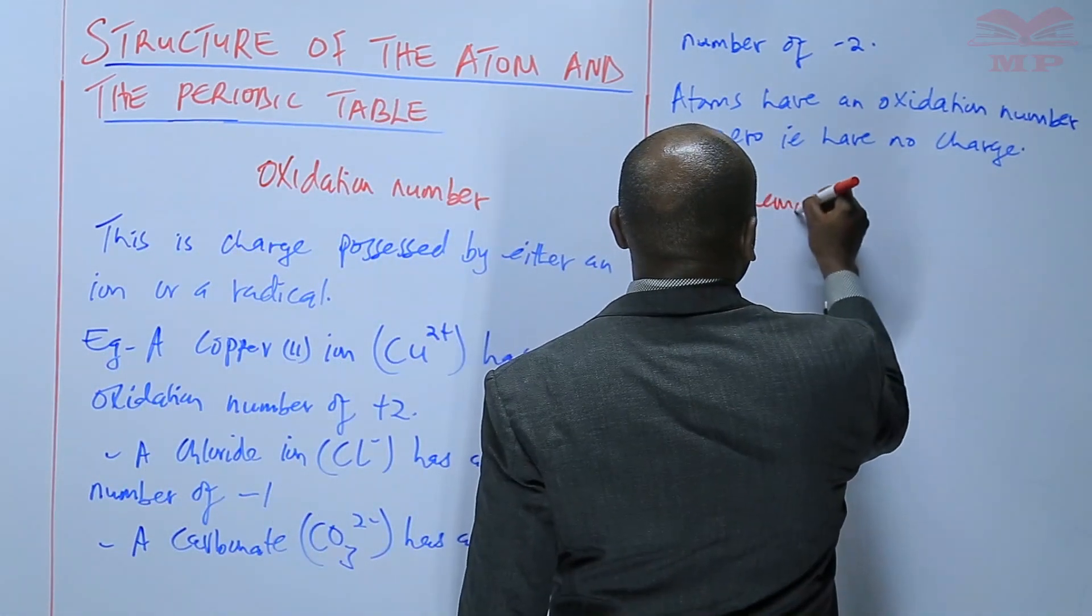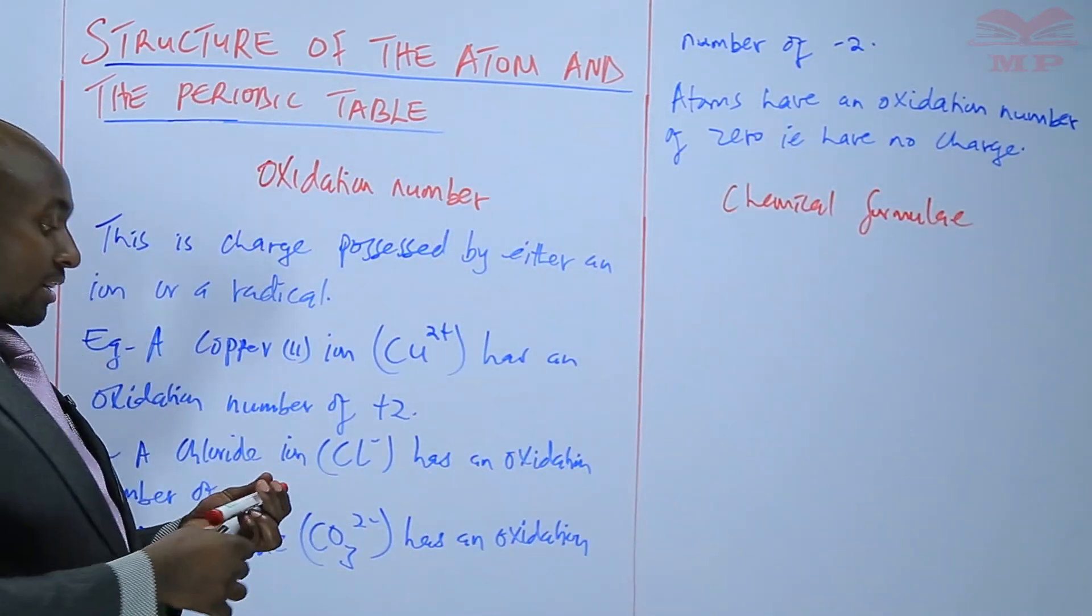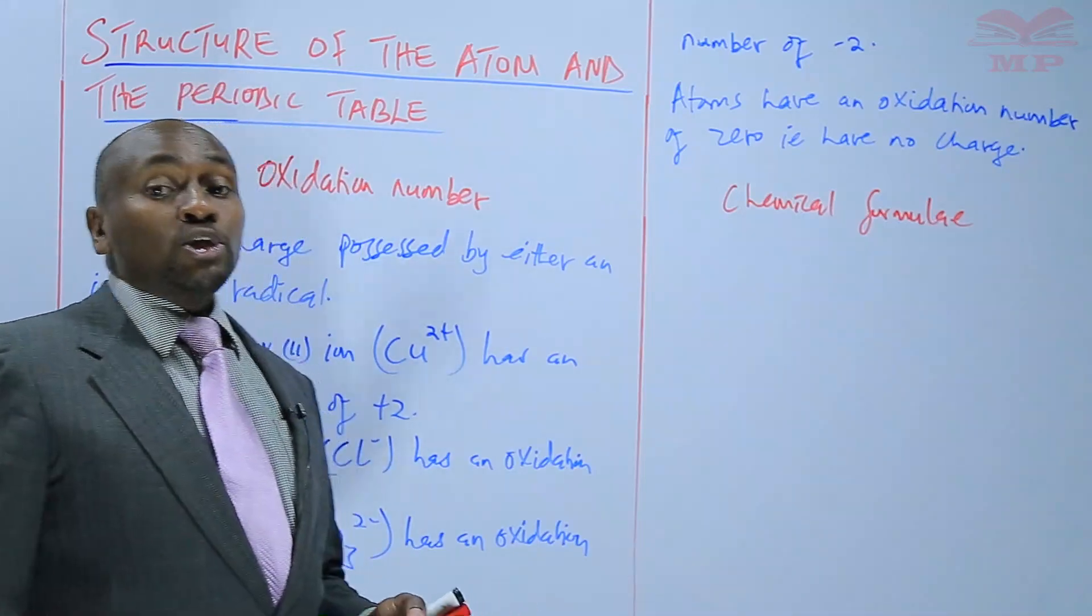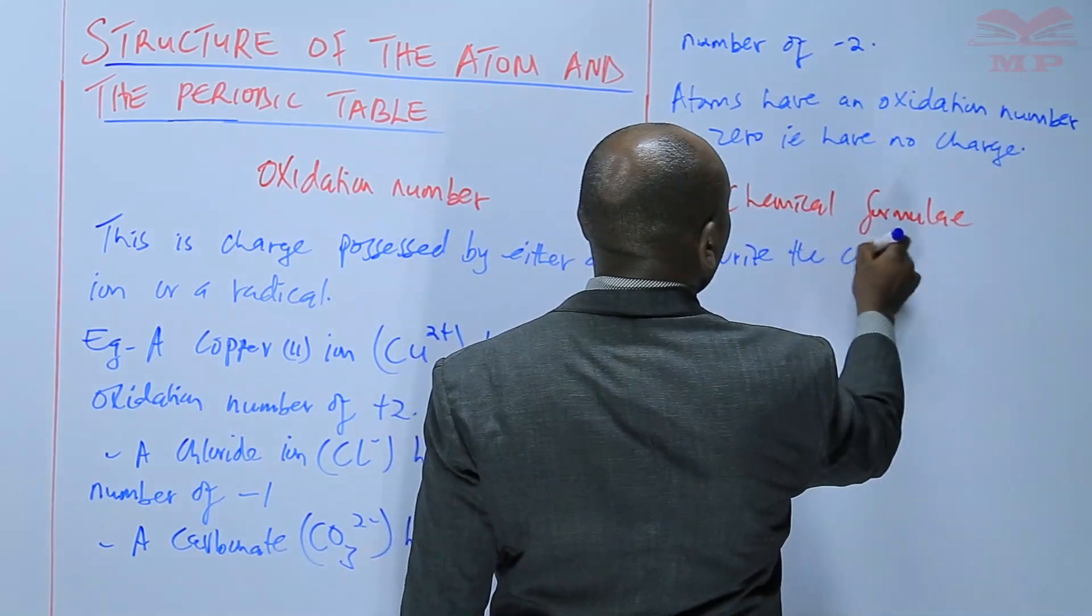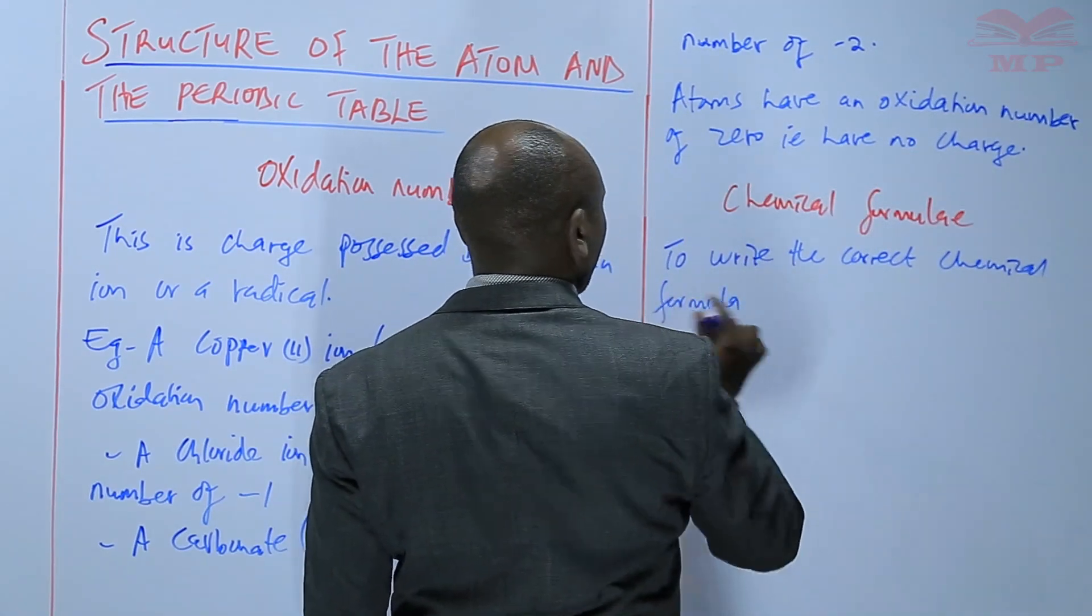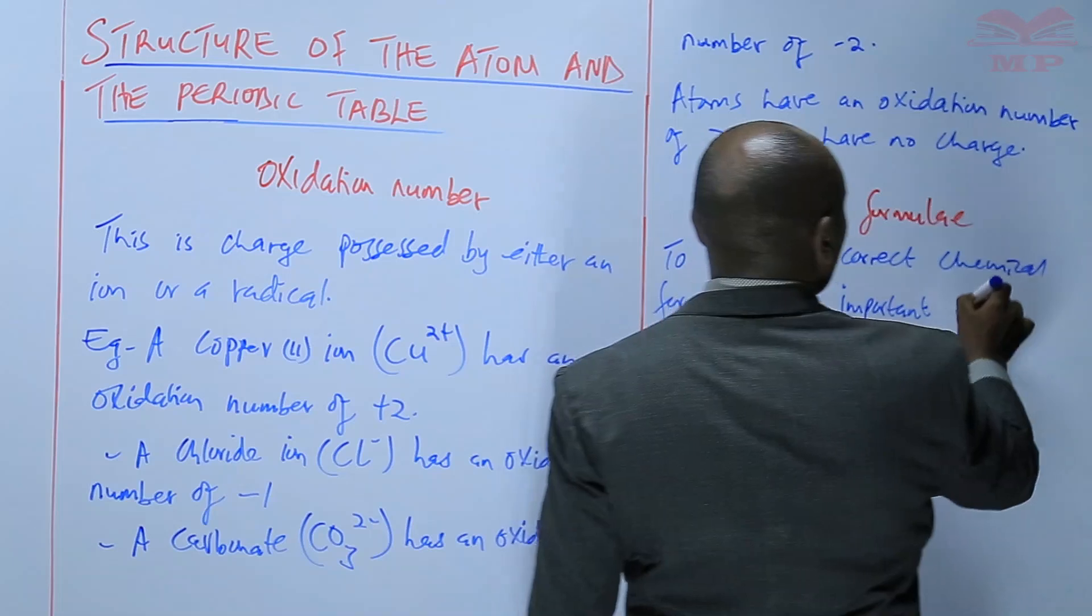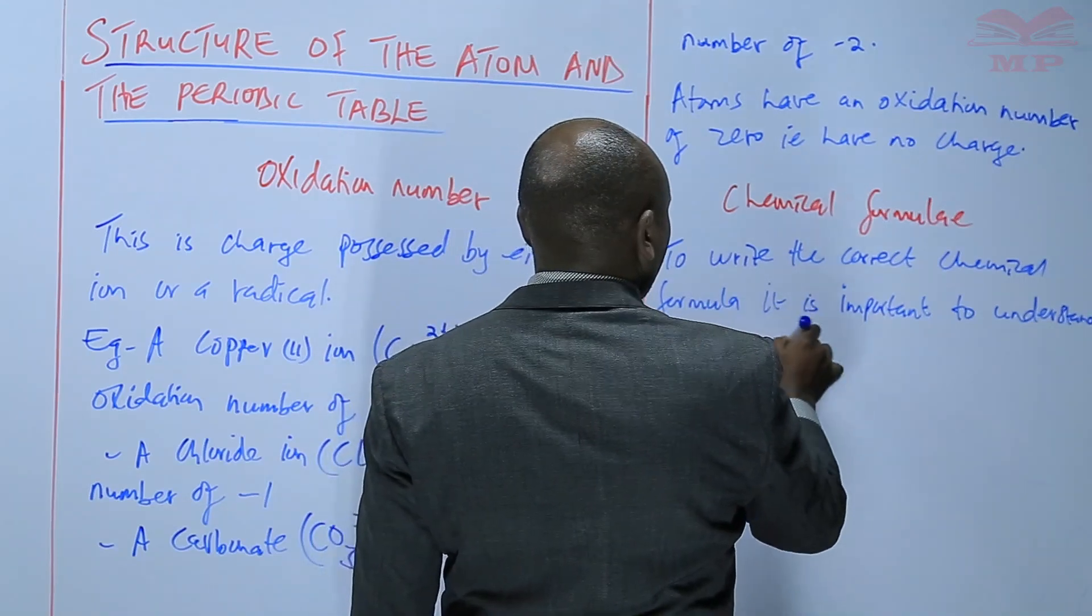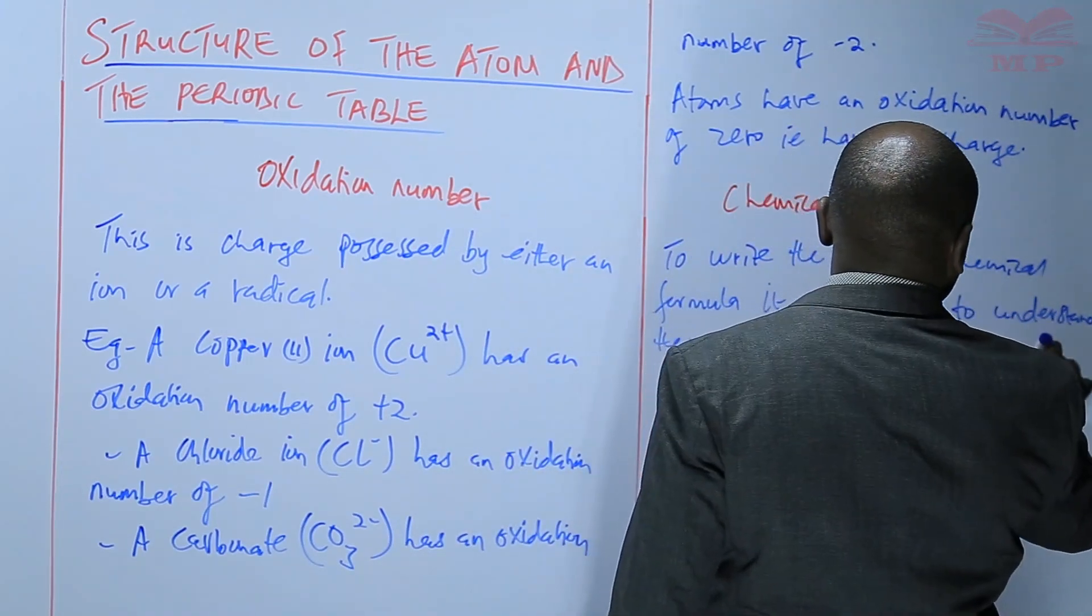The other thing I want us to discuss is chemical formula. And the chemical formula represents compounds whose formula is written using the valences. So to write the correct chemical formula it is important to understand the valency which is the combining power of elements.